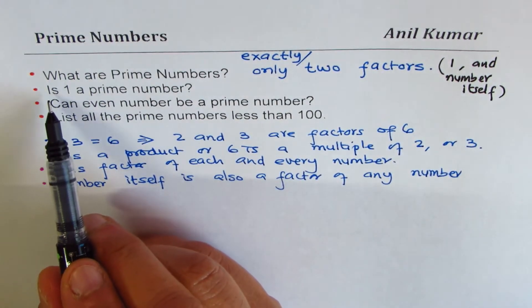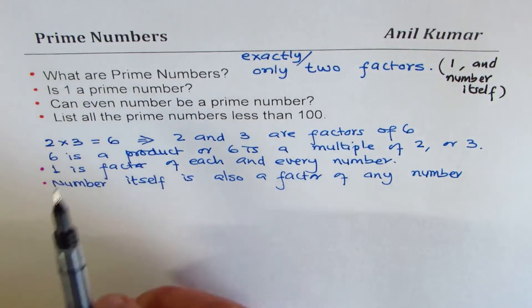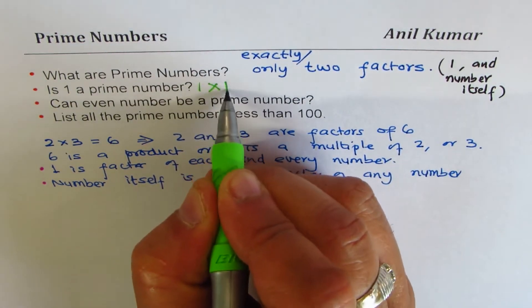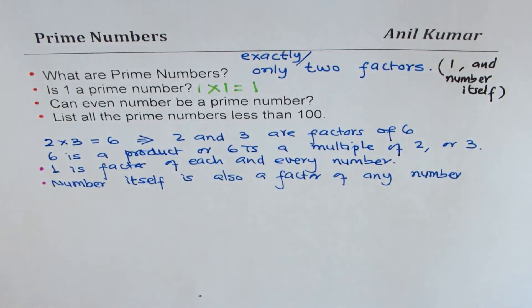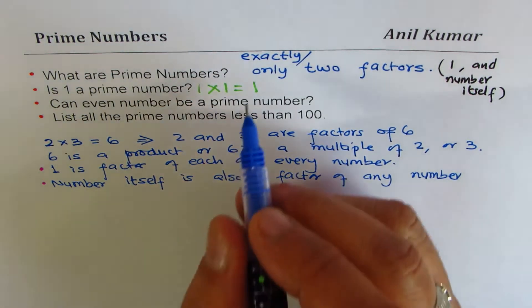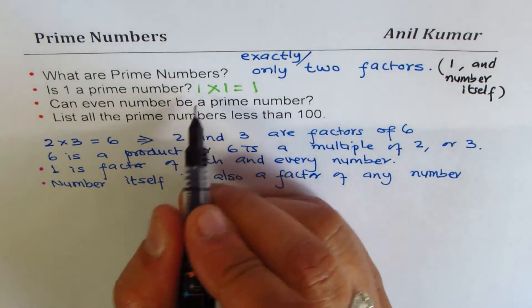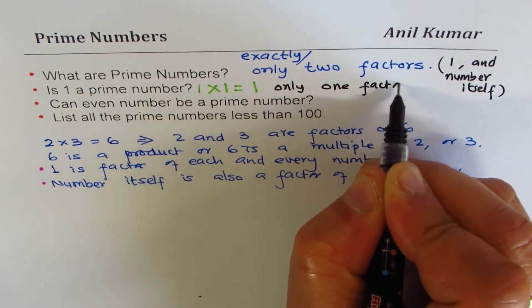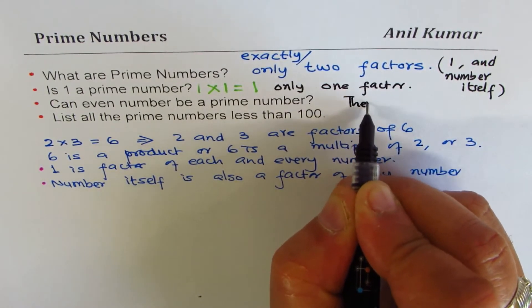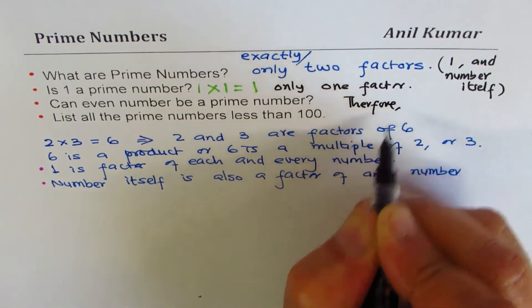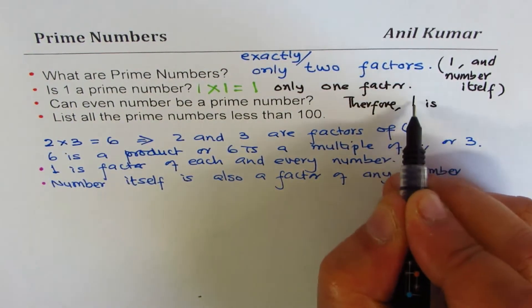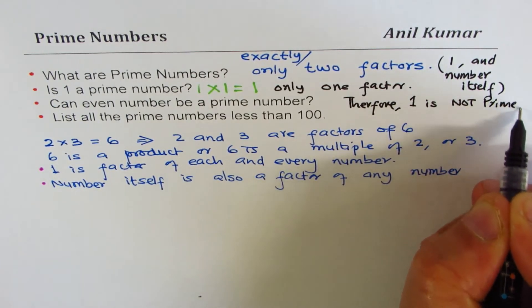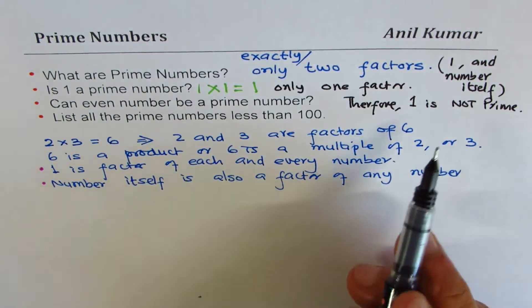Now let's get into question number two: is one a prime number? Well, you get one when you multiply one times one equals to one. How many factors does it have? It has only one factor. Only one factor. Therefore, one is not prime. So one is not a prime number.